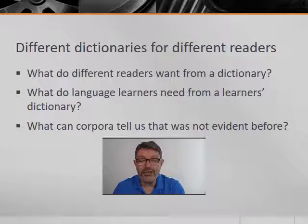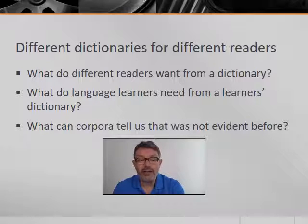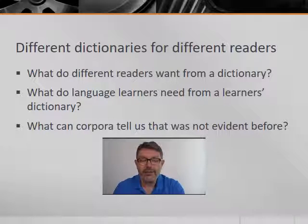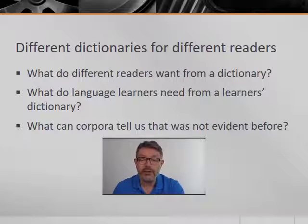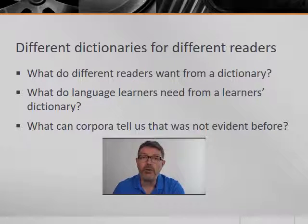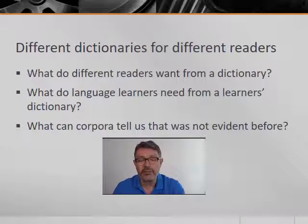The OED is a fantastic achievement, completed long before the computer age, and rightly regarded as a heroic enterprise. But does it give us everything we want from a dictionary? What do different readers want? Do they really want the etymological meaning of koutou? What do language learners want? Maybe they want to know how the word is used today, whether it's used frequently enough to be worth learning by heart, and the words and phrases that commonly go with koutou. These are things that corpora can tell us more easily and accurately than a network of volunteer readers.